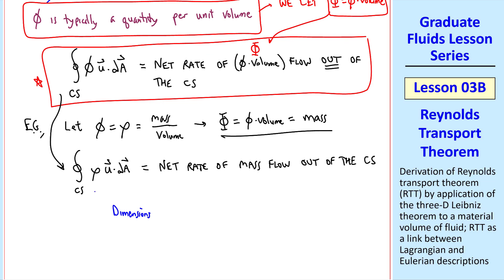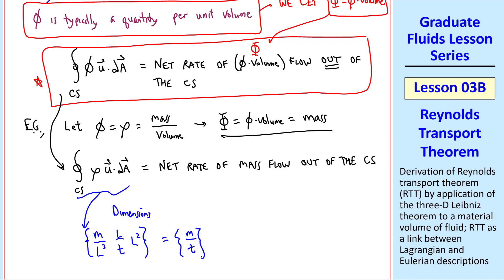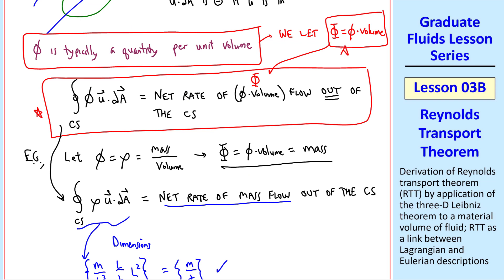I always like to check the dimensions. Density gives us mass per volume, which is L cubed. Velocity is L over T, and area is L squared. Using curly brackets as the dimensions of, the L's cancel and this reduces to mass per time — a rate of mass flow. So the dimensions are correct. In the Reynolds Transport Theorem, we will always use lowercase phi, but the actual property flowing through is capital Phi — lowercase phi times volume.